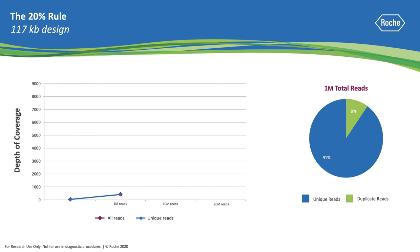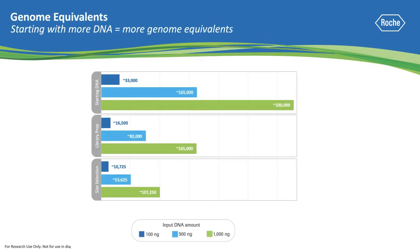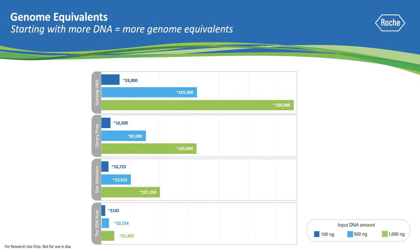This figure shows the effect of increasing amounts of sequence used for a 117 KB design. At 1 million reads, the duplicate rate is 8.5%. This effect will worsen as you approach the theoretical maximum coverage. For example, increasing that number tenfold to 10 million reads results in a duplicate rate of 45%. Increasing to 20 million reads results in a duplicate rate of 58%. If we go back to the original image that shows various input DNA amounts, we can now see that if you follow the 20% rule, it will help you manage expectations in your targeted NGS projects by estimating realistic coverage and still maintaining a low duplicate rate.